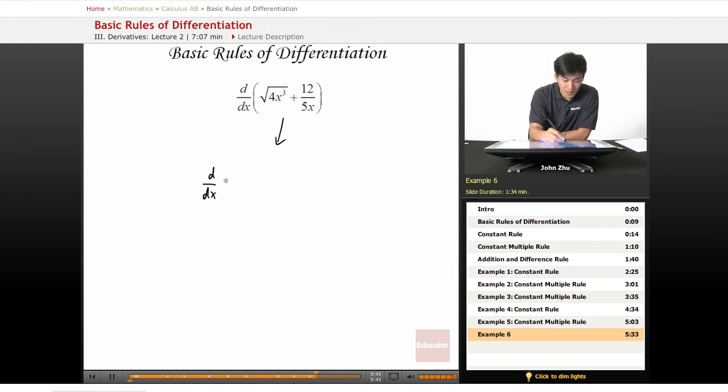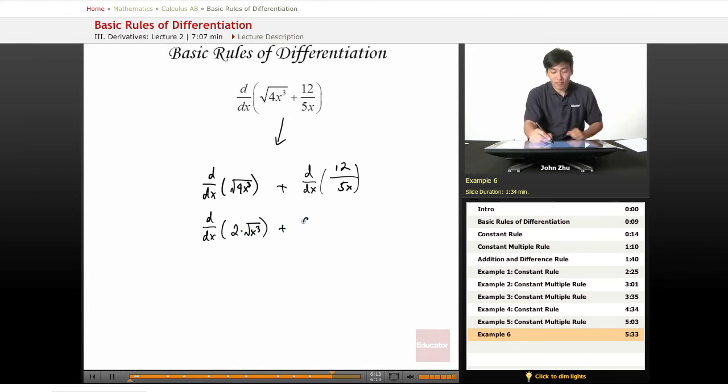Split this up into two parts: d/dx of square root of 4x cubed plus d/dx of 12 over 5x. We can further split these up, and d/dx of that square root of 4x cubed just equals square root of 4 times square root of x cubed, which means 2 times square root of x cubed. Plus, for the second part, we have 12 over 5 times 1 over x.